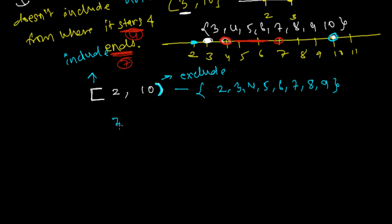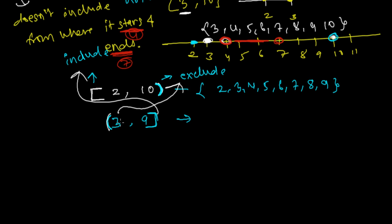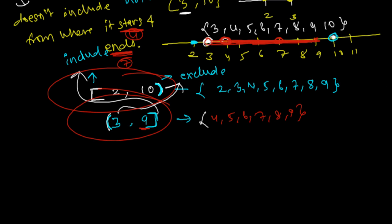Sometimes you get the opposite: open bracket three, nine closed bracket. The open side means exclude three, and the closed side means include nine. So we go to the next number after three — four, five, six, seven, eight, nine — and we include nine as well. So there are four types: purely inclusive, purely exclusive, inclusive on one side and exclusive on the other, and vice versa.